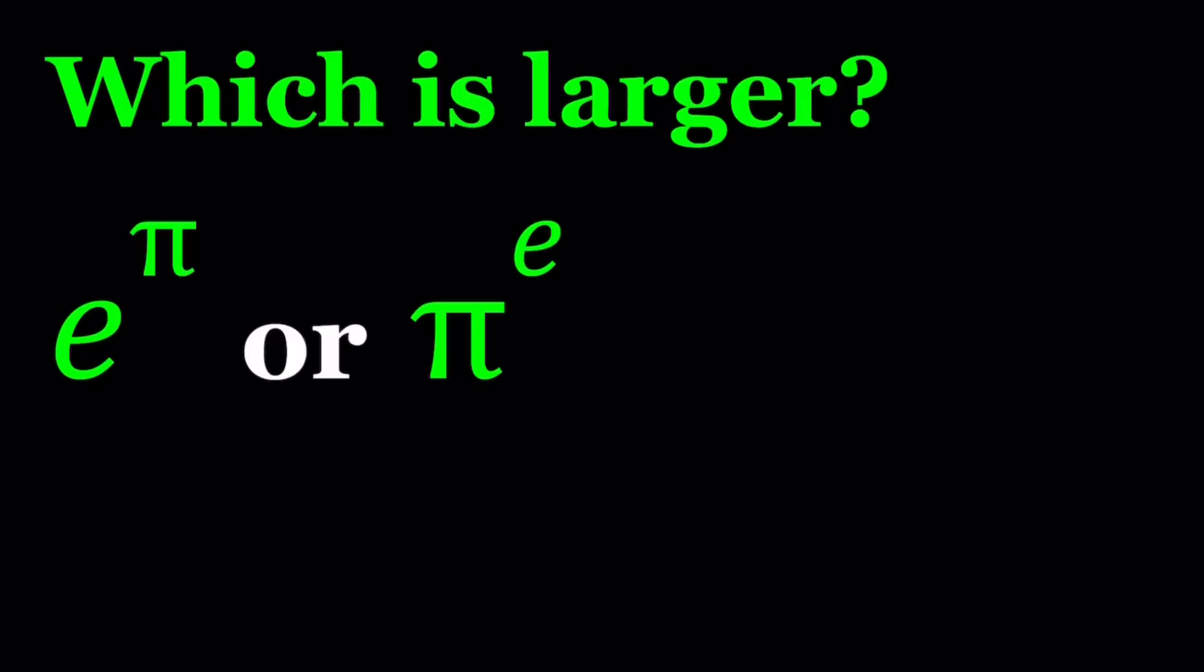Two very irrational and even transcendental numbers, because e and π are transcendental numbers. It's a special group of irrational numbers, and the definition would be if a number is not the root of a polynomial with integer coefficients, then it is transcendental.